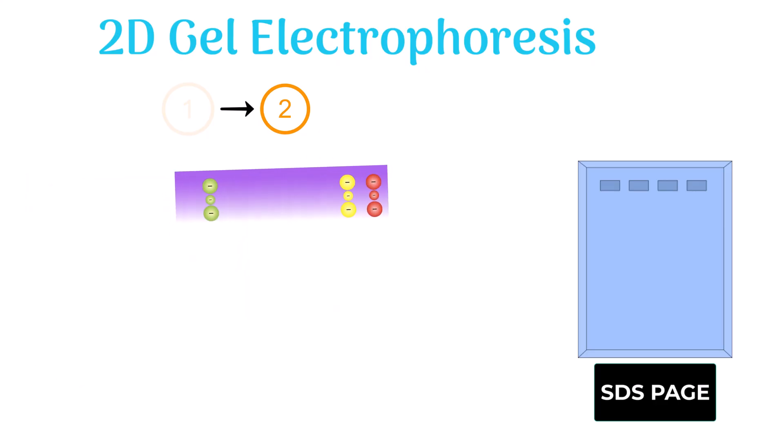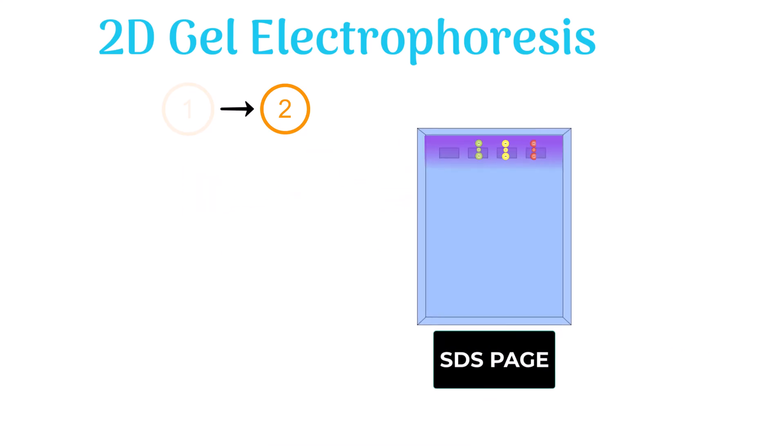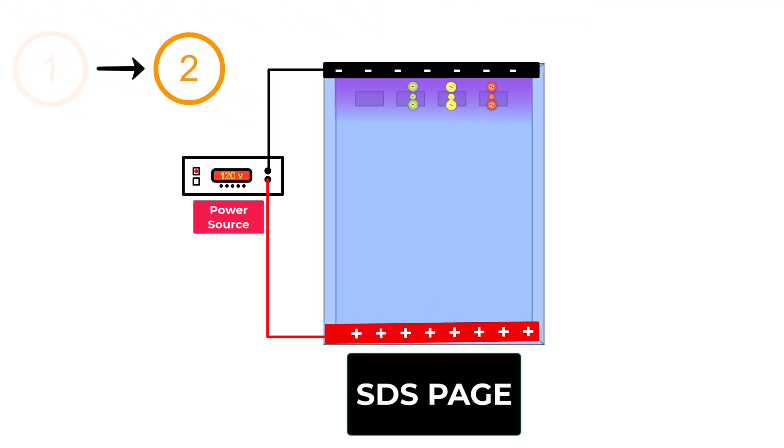After this, the protein molecules on the gel become negatively charged. Next, we place the strip on top of a polyacrylamide gel and apply the electric field. The proteins now head towards the positive end of the gel.